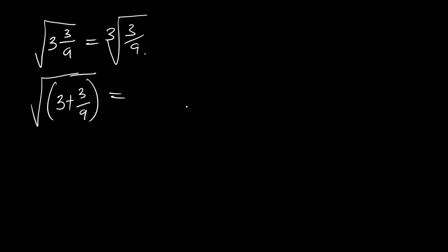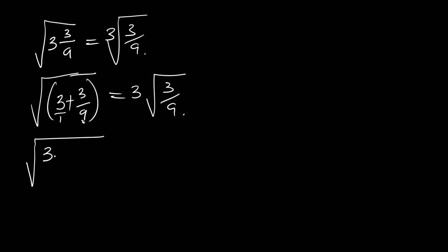This equals 3 square root of 3 all over A. Looking at the left side, the expression 3 whole number 3 over A is over 1, so we make the denominators the same by multiplying the numerator and denominator. We get 3A divided by A, which is the same as 3 plus 3 all over A.